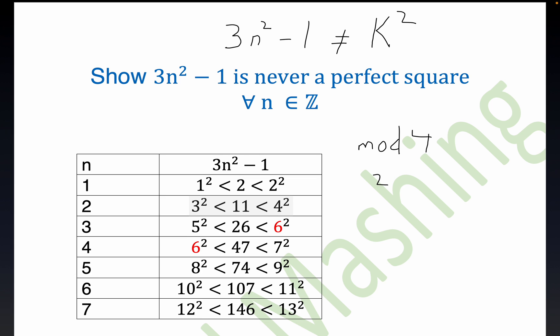Now right here, the remainder when you divide 11 by 4 would be 3, right? The remainder when you divide 26 by 4, that's 6 times 4 plus 2, right? Is 2. Now let's see, what about 47? 47 divided by 4 would leave a remainder of 3.